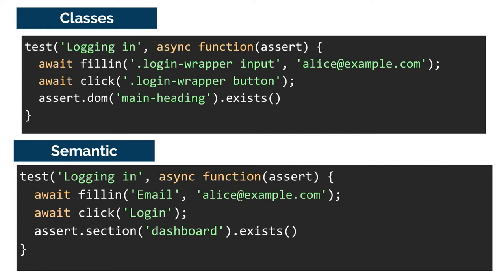In the semantic version, the fill-in helper ensures the thing you're filling in is semantically correct — that the tag and its attributes actually convey what it is, because that's how a screen reader will announce it. Click will assert it's a button and the text is there. 'Assert.section dashboard exists' asserts you're using the correct section element, that the heading is correctly bound, and that it exists — asserting far more than the CSS version.